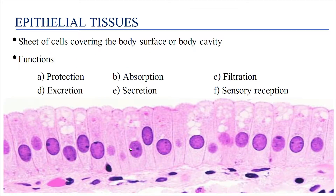What are epithelial tissues? They are sheets of cells covering the body surface and body cavities, lining the lumen of organs. They perform various functions like protection, absorption, filtration, excretion, secretion, and sensory reception.